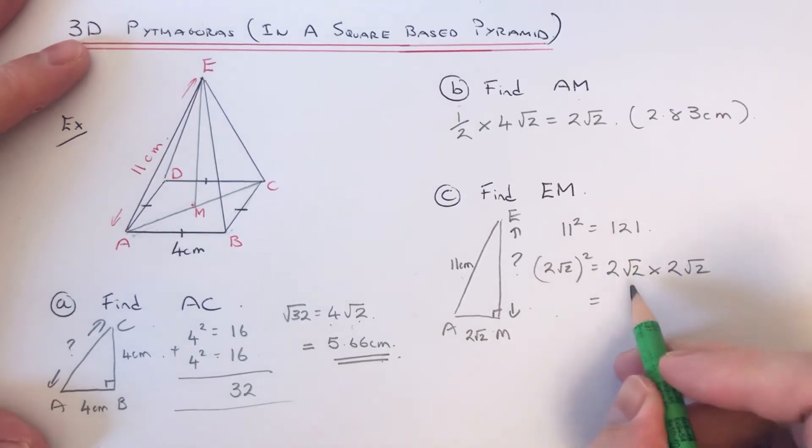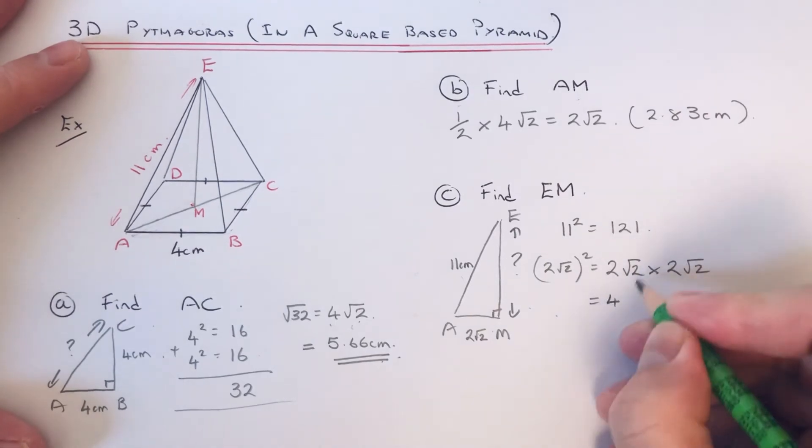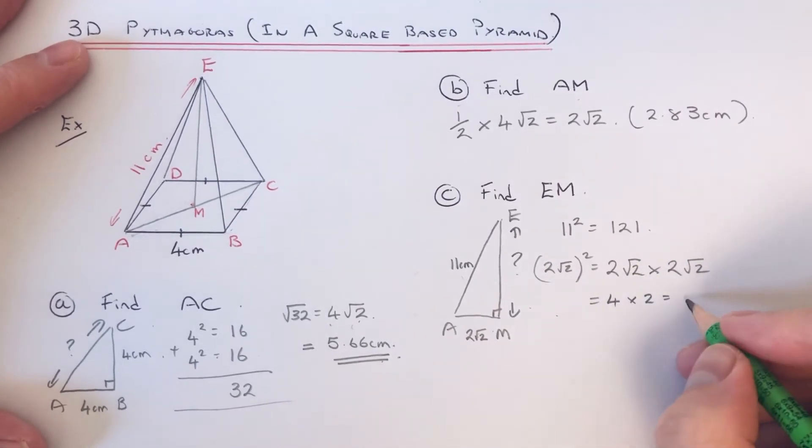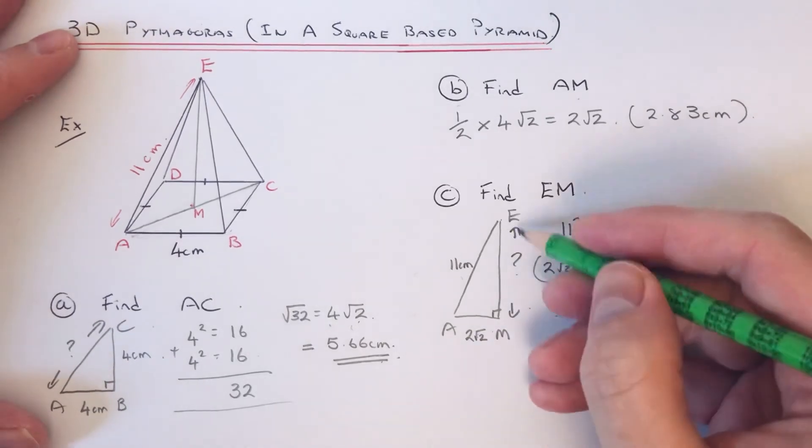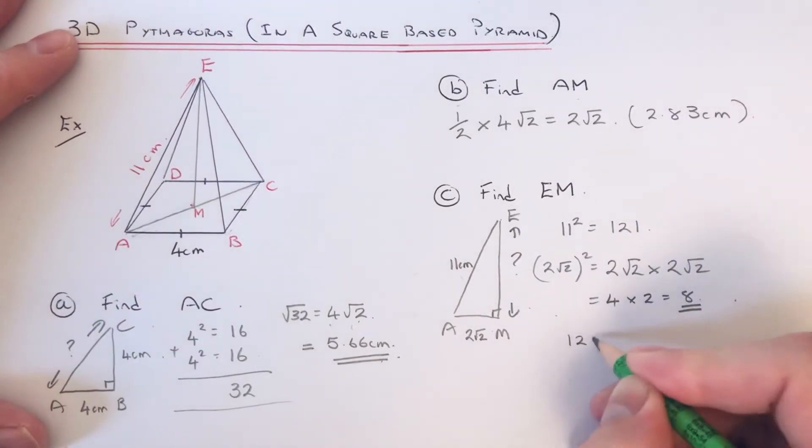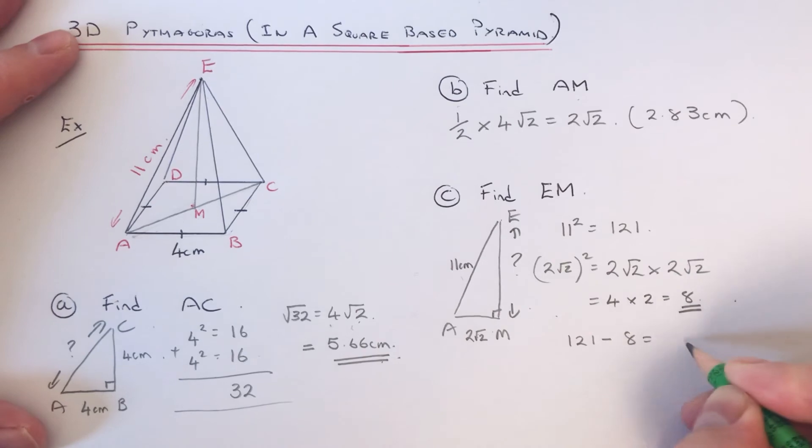You could do this on your calculator. I'm just going to work it out by hand. So it'll be 2√2 times 2√2. 2 times 2 is 4, √2 times √2 is 2, so 4 times 2 is 8. And then, since we're finding the shorter side, we can take 8 away from 121, which is 113.